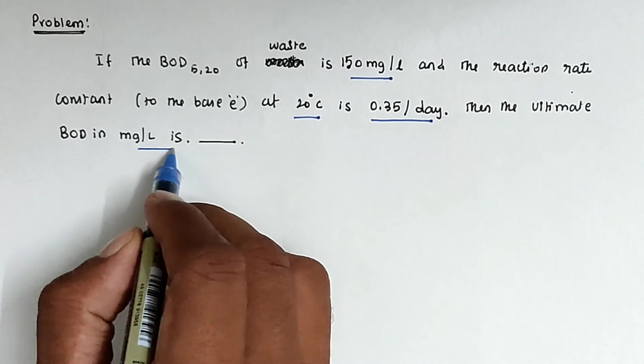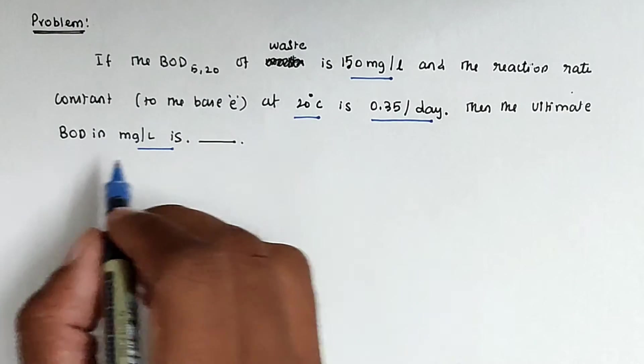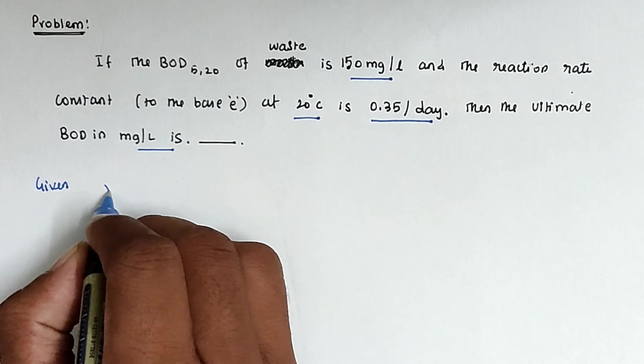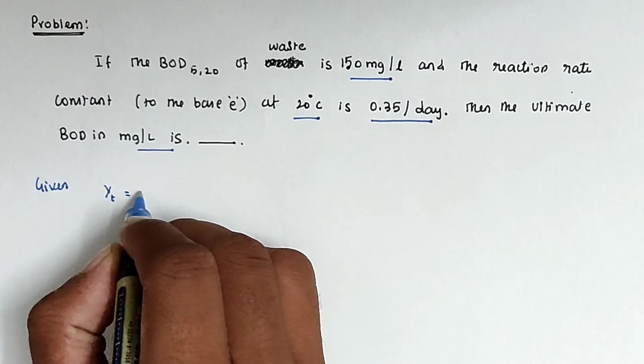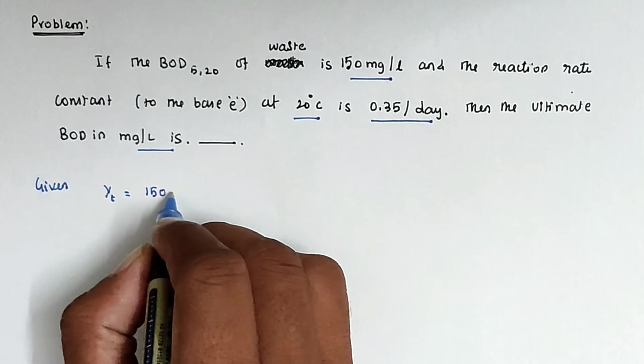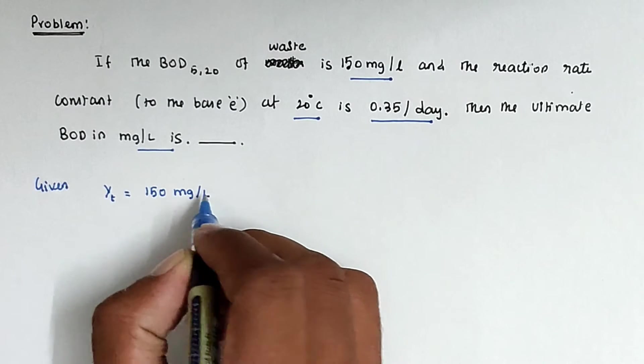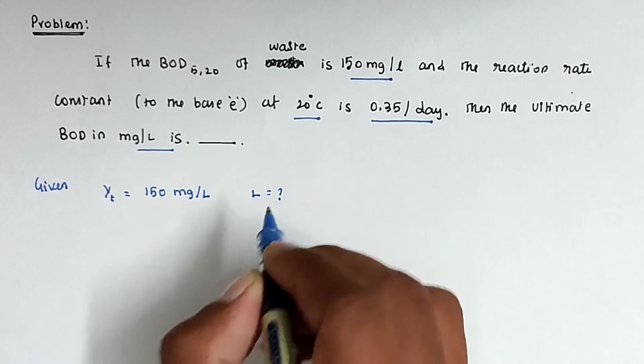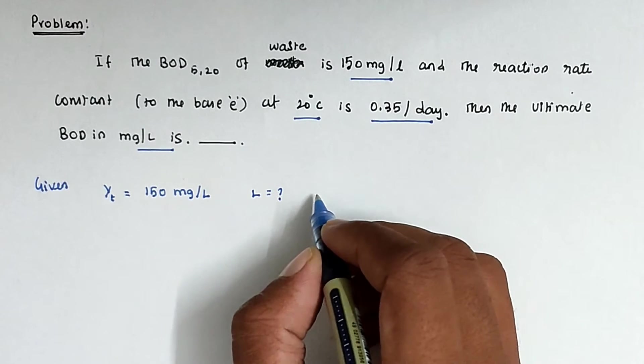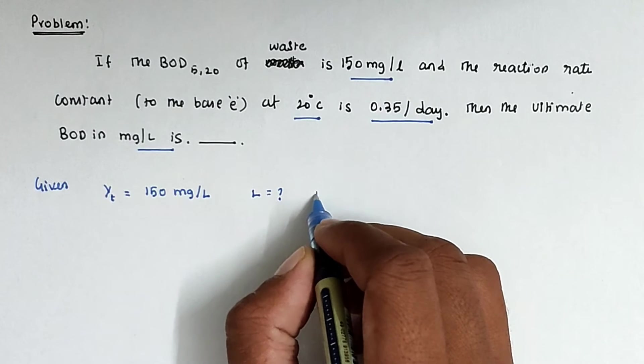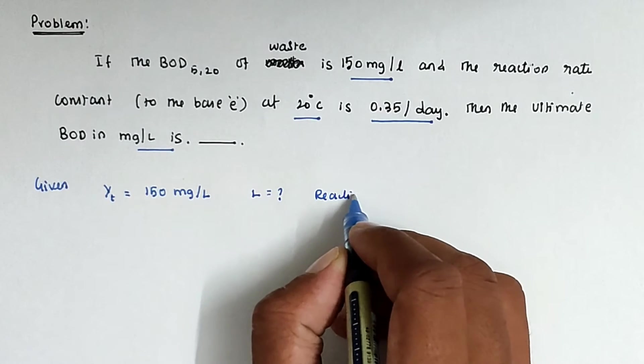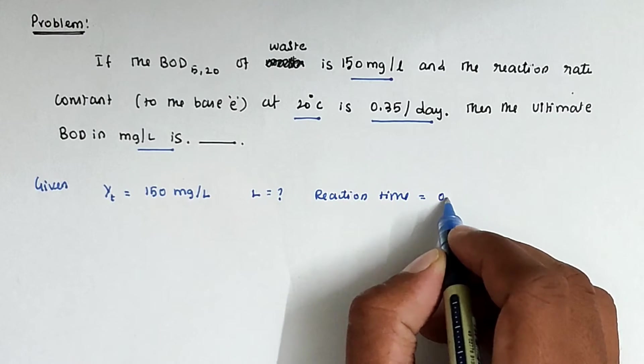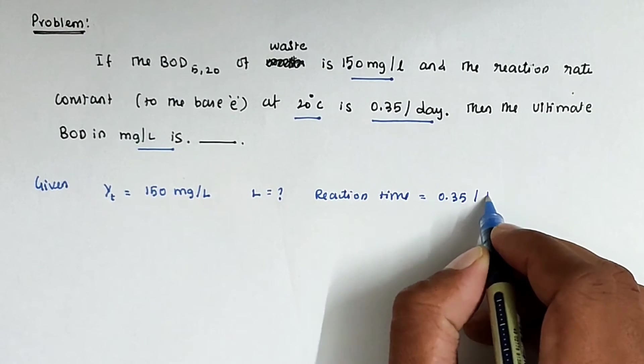This is the problem. The given value is BOD Y_T equal to 150 milligrams per liter. We have to find out the L value. The reaction time is also given: 0.35 per day.